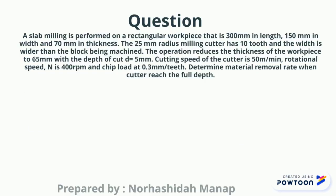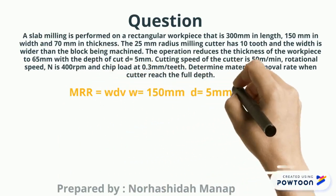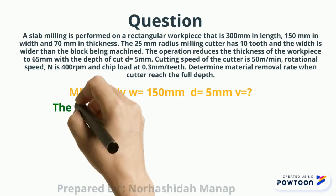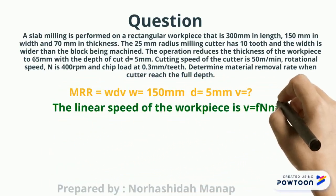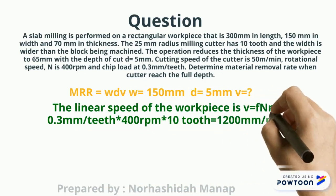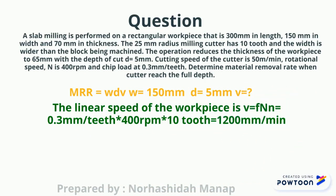First, let's list the equation. MRR equals W times D times V, where width W equals 150 mm, depth of cut D equals 5 mm, and we have to find V, the linear speed. The linear speed of the workpiece equals feed times number of rotations per minute times number of cutter teeth, which equals 1200 mm per minute.